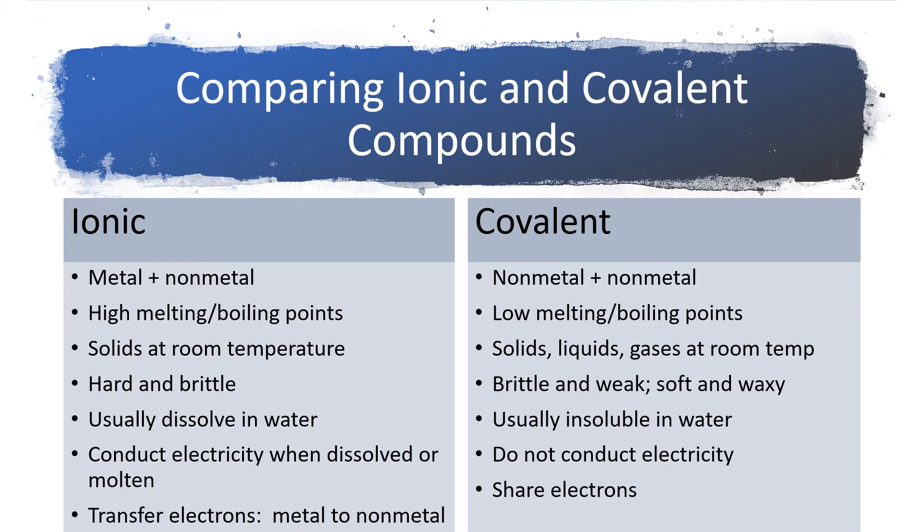Ionic compounds tend to be very hard and brittle. Some covalent compounds are brittle, but they tend to be fairly weak or they tend to be soft and waxy like candle wax. Ionic compounds typically dissolve in water, though not always. Ionic compounds will conduct electricity when dissolved in water or a solvent or when they are melted. Covalent compounds don't conduct electricity.